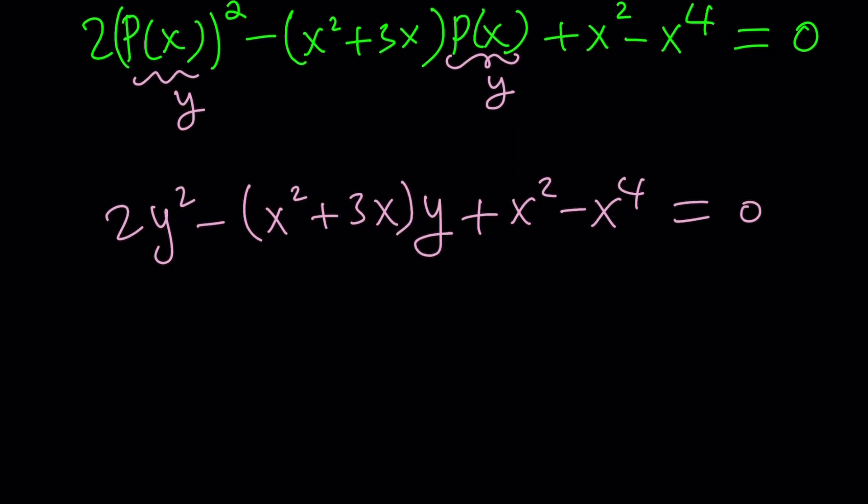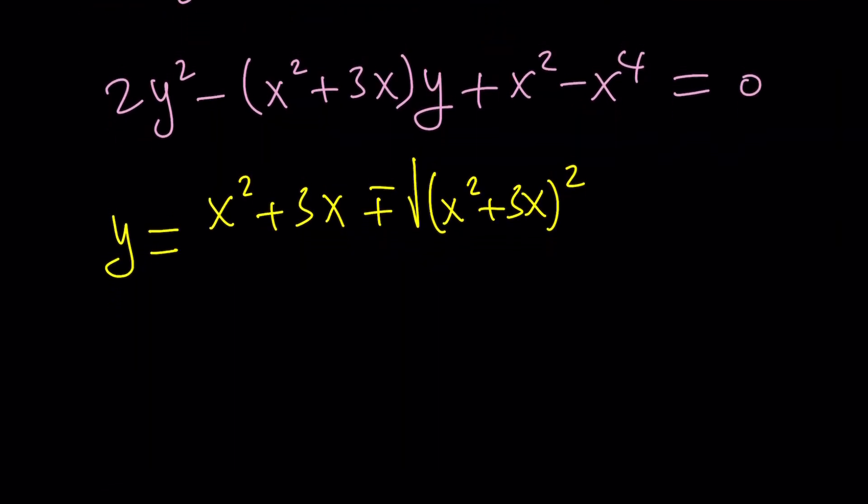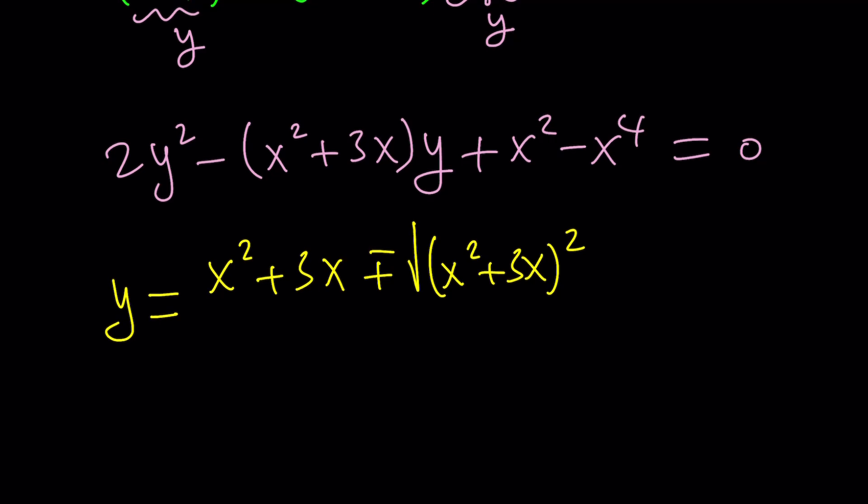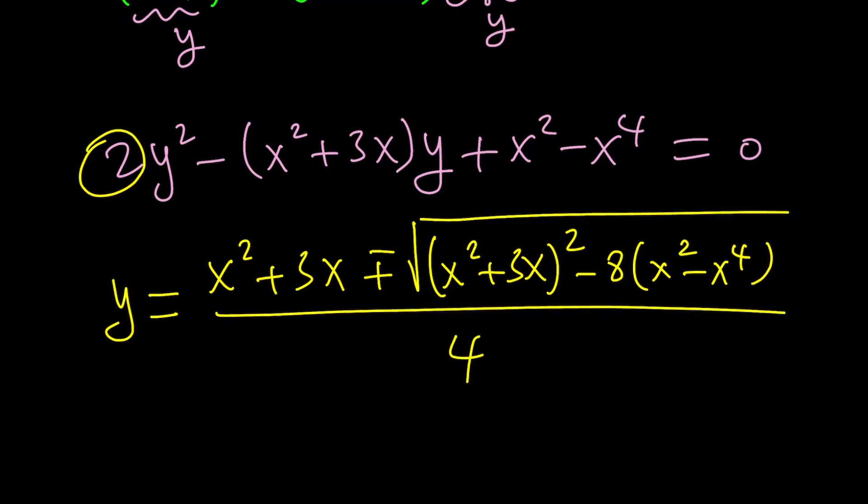Now, we can go ahead and use the quadratic formula for y. y equals negative b, which is x squared plus 3x, plus minus the square root of b squared minus 4ac. That's going to be our discriminant. Let's go ahead and write it down. I'll probably, next step, I'll simplify the discriminant and then just plug it in there, so we don't have to write this gigantic thing every time. b squared minus 4ac, which is going to be 8 times x squared minus x to the fourth power. And all of that is divided by 2a, which is 4, because a is 2.